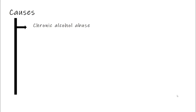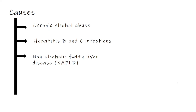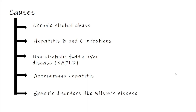Another big cause is hepatitis B and C — these are viral infections that can inflame the liver and lead to long-term damage. Then we have non-alcoholic fatty liver disease, or NAFLD. This happens when fat builds up in the liver, often due to obesity or diabetes, even if you don't drink alcohol. There is also autoimmune hepatitis, where the body's own immune system mistakenly attacks liver cells.